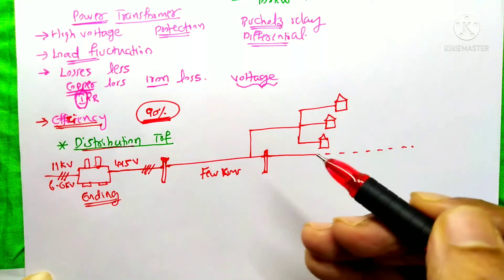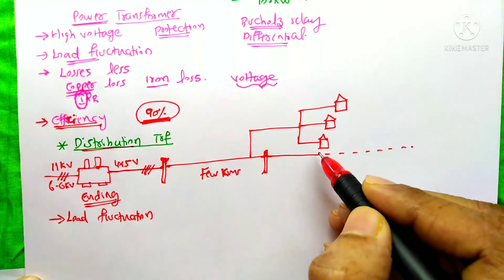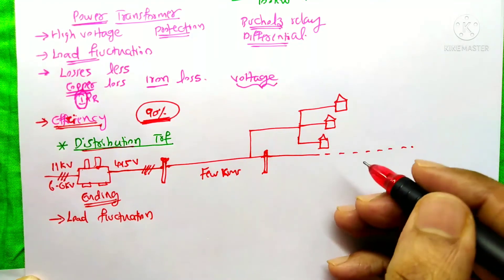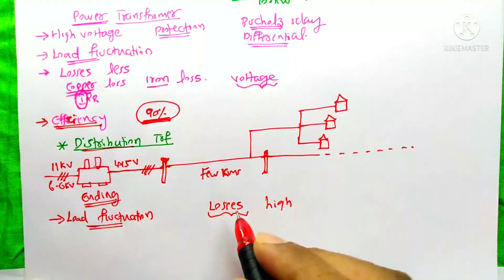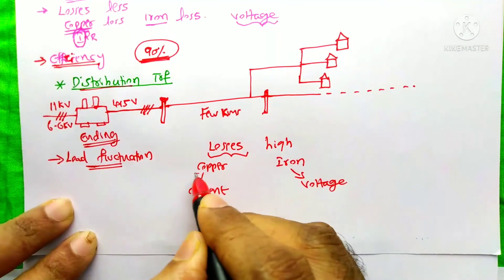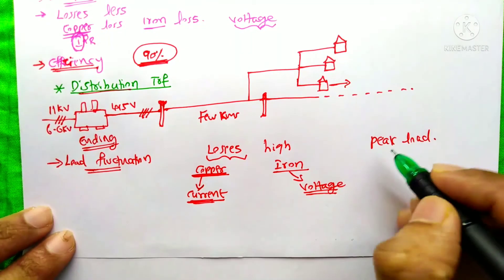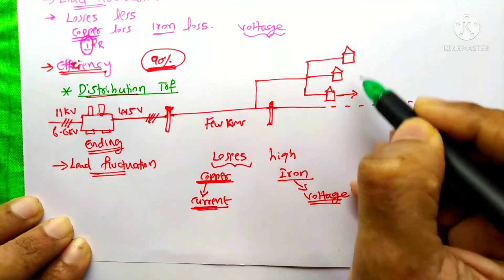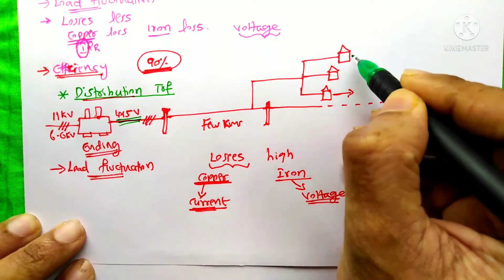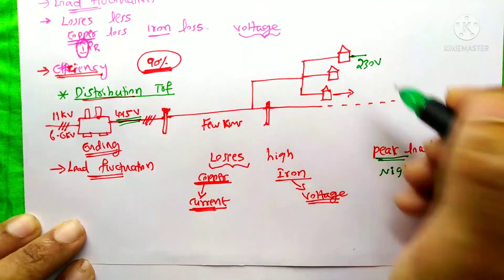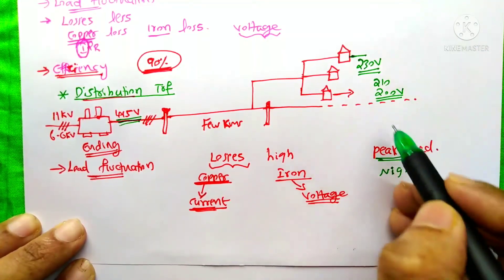After this distribution transformer there would not be any other transformer. Load fluctuation is very high for the distribution transformer — we don't know when each consumer will switch their loads on or off; at any time, anything can happen. Because of this high load fluctuation, the losses in the distribution transformer are high. Iron losses increase at peak load time, which mainly happens at night when all loads are on simultaneously. At that time the distribution transformer cannot deliver the full 415 V; for single-phase consumers at 230 V, you might measure only 210 V or 200 V — that is the voltage fluctuation.